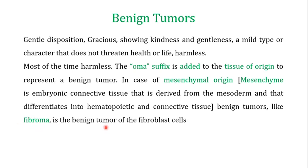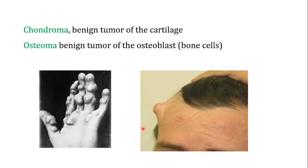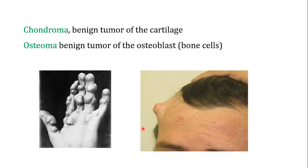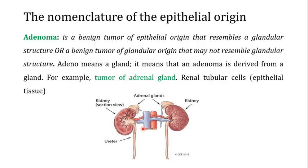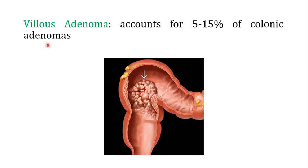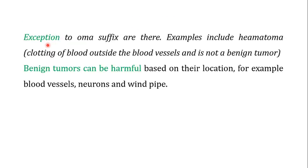Fibroma is the benign tumor of fibroblast cells, chondroma is the benign tumor of cartilage, and osteoma is the benign tumor of osteoblasts. For tumors of epithelial origin, adenoma is the term used for the benign tumor of glands. We also talked about villous adenoma, papilloma, and then discussed some exceptions.